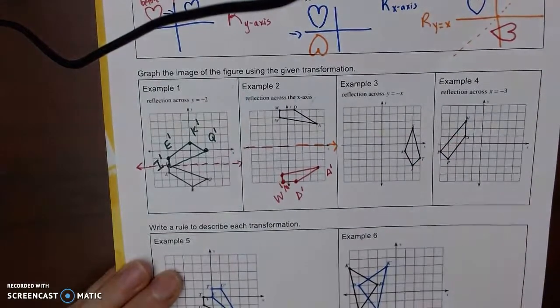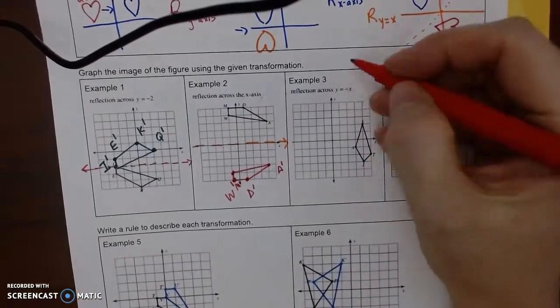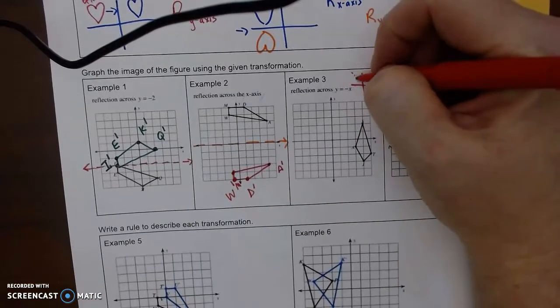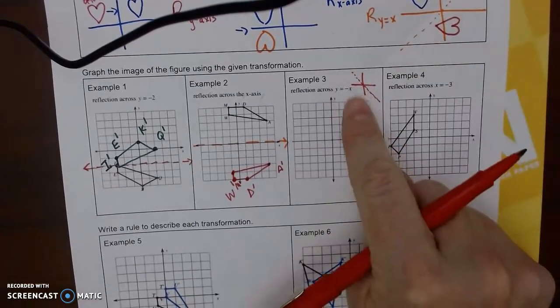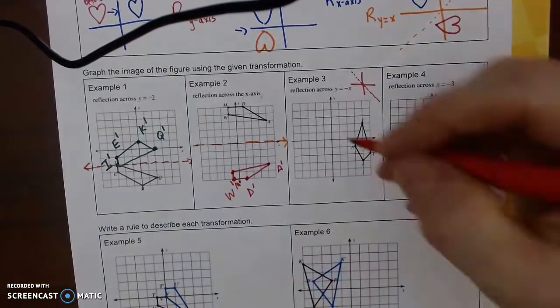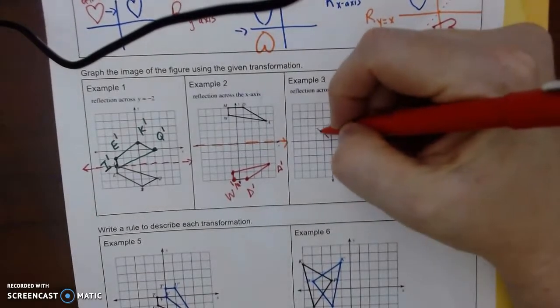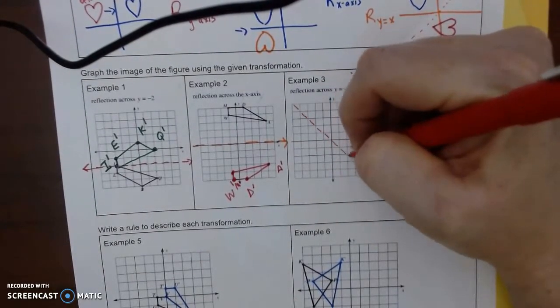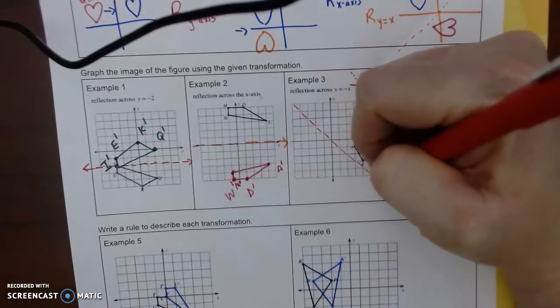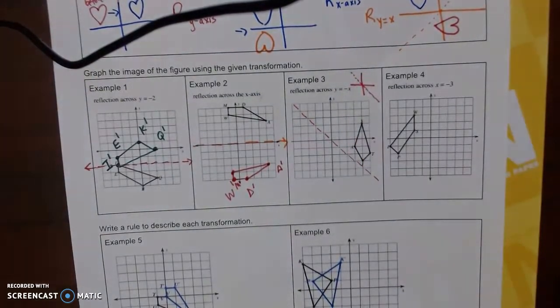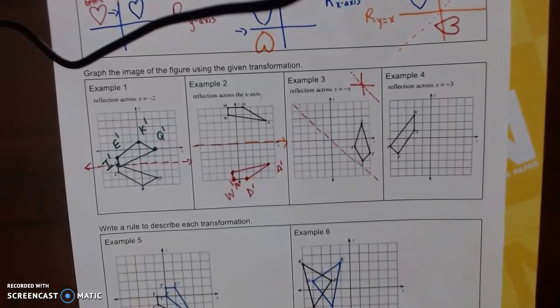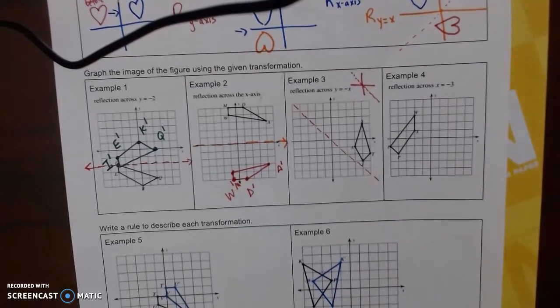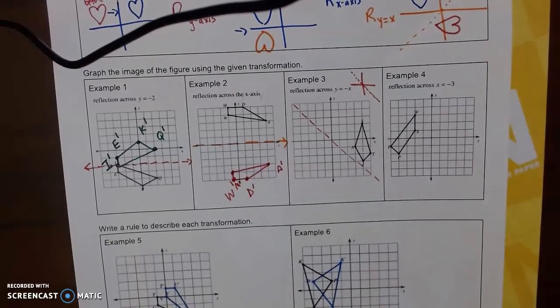Okay, so y equals negative x is actually going to be a diagonal line going backwards, so it's in quadrants two and four. Okay, so I like to draw that in, and it goes right through the corners of the square. It helps if you draw this in because you're going to be counting spaces to that red dotted line. It is almost impossible for me to do this without drawing it.